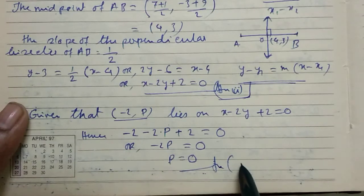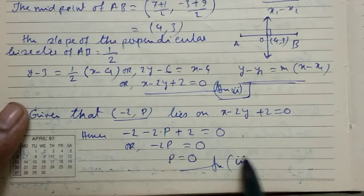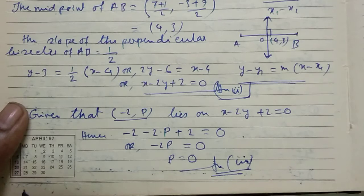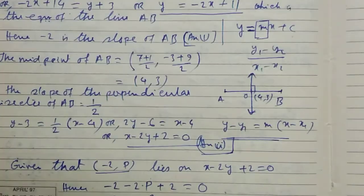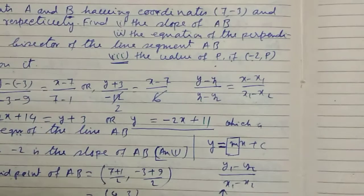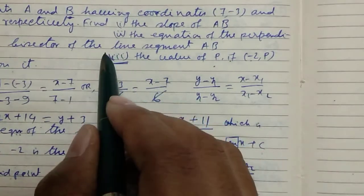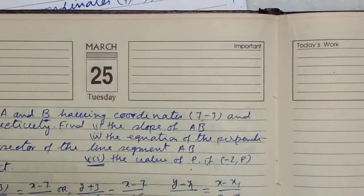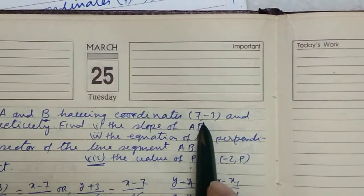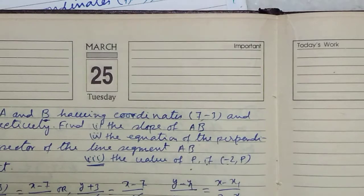Hence this is the answer for 3. Here is a doubt that if the perpendicular bisector, that is the answer, if it means the line segment AB, so we can get another answer.